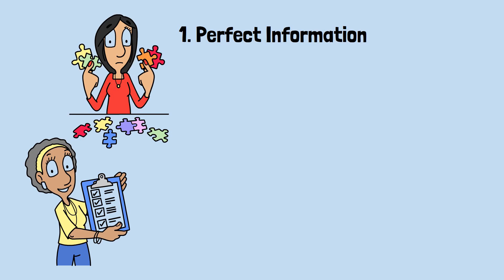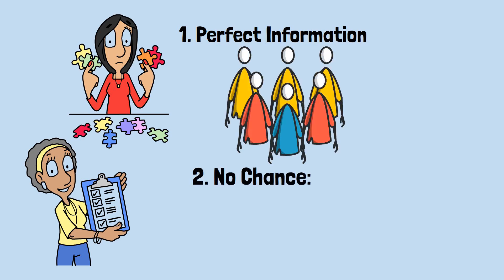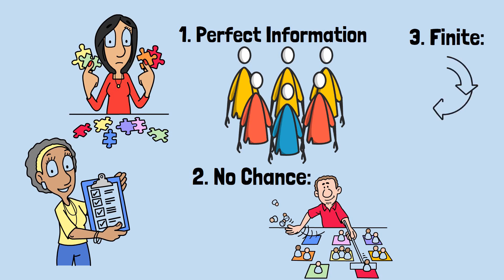1. Perfect information: All players know the complete state of the game at all times. 2. No chance: The outcome depends entirely on the player's choices. 3. Finite: The game must end after a finite number of moves.